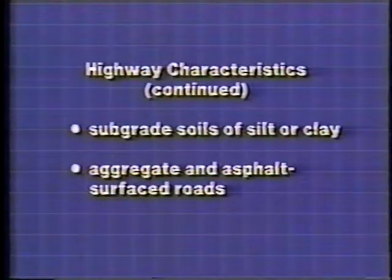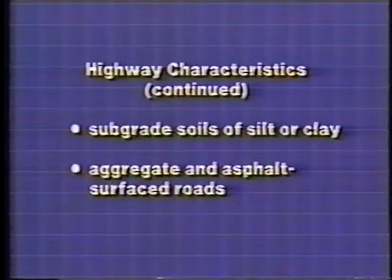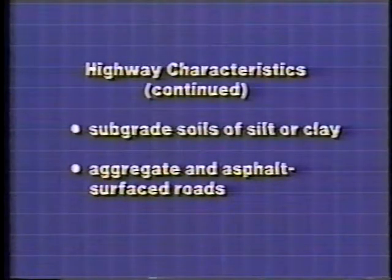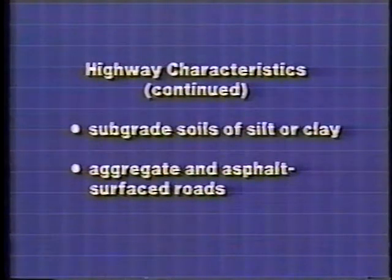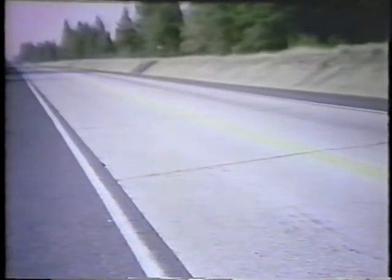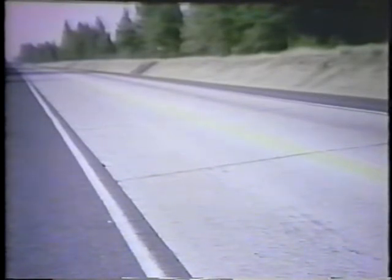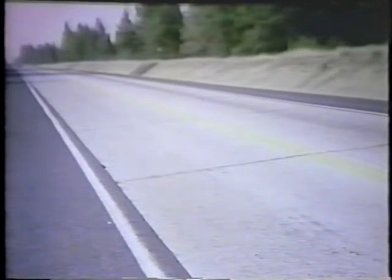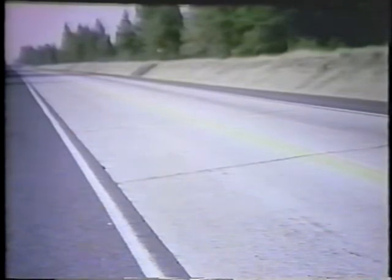Load restrictions are primarily applied to pavements with subgrades of moisture-sensitive silt or clay, and are normally applied to aggregate and asphalt-surfaced roads. Most Portland cement concrete pavements have a structure strong enough to withstand the critical thaw period. This Portland cement concrete pavement near Spokane, Washington is in an area where many flexible pavements experience seasonal distress, yet it has provided over 50 years of service without the need for load restrictions.